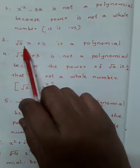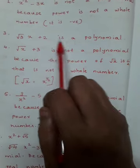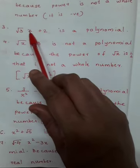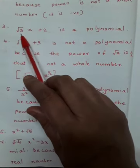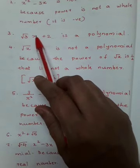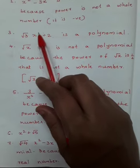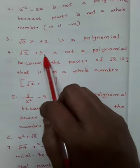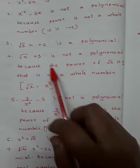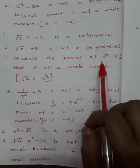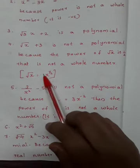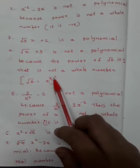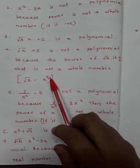Next, √3·x + 2: it is a polynomial because √3 is a real number — that is the coefficient of the variable x — and the power of the variable is the whole number 1. Next, √x + 3: it is not a polynomial. Why? The power of √x is 1/2, since √x = x^(1/2), and 1/2 is not a whole number — it is a fraction.